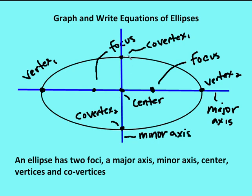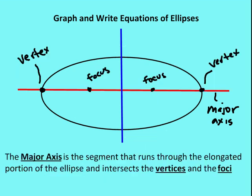The center is the intersection of the two axes, and the foci are going to be along the major axis. The major axis is the segment that runs through the elongated portion of the ellipse and intersects the vertices and the foci.